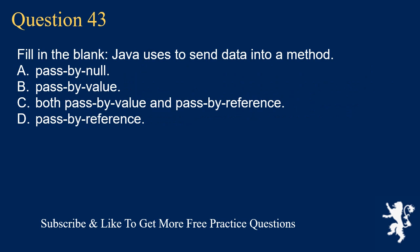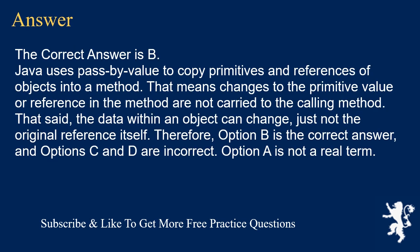Question 43. Fill in the blank: Java uses ___ to send data into a method. A. Pass by null. B. Pass by value. C. Both pass by value and pass by reference. D. Pass by reference. The correct answer is B. Java uses pass by value to copy primitives and references of objects into a method. That means changes to the primitive value or reference in the method are not carried to the calling method. The data within an object can change, just not the original reference itself. Option A is not a real term.